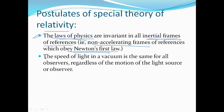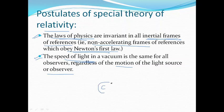According to the second postulate, the speed of light in a vacuum is the same for all observers, regardless of the motion of the light source or observer. So even if we are moving towards or away from the light source, the speed of light is always constant in a given medium. In free space, we have C as the velocity of light, and this is constant regardless of the motion of the observer or that of the source.